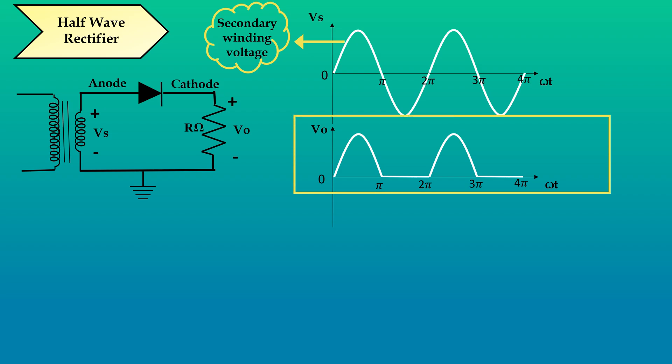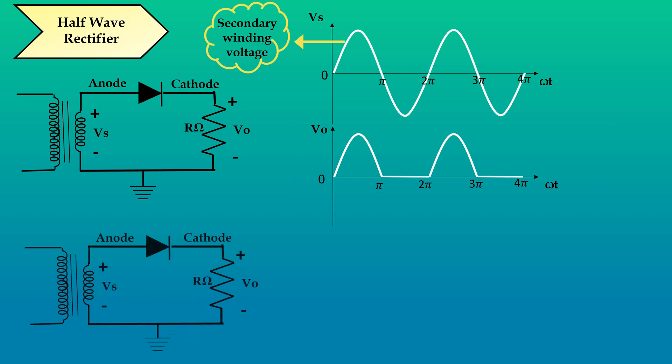But in full wave rectifier, we need the whole input waveform to be rectified. Now, let's consider the same circuit and provide a small change in the input of this circuit. Let's provide a 180 degree phase shift to its input voltage. Therefore, our input voltage waveform will be like this.